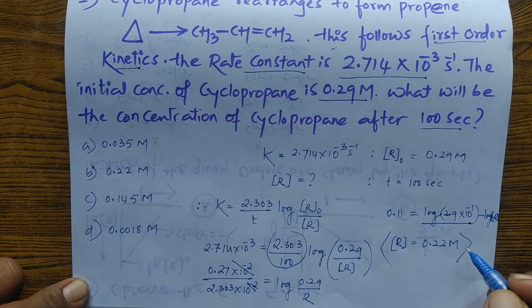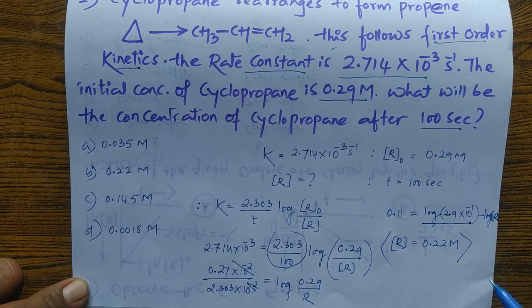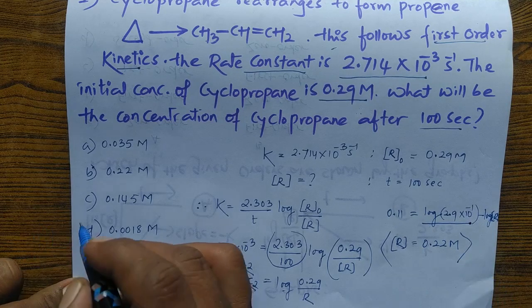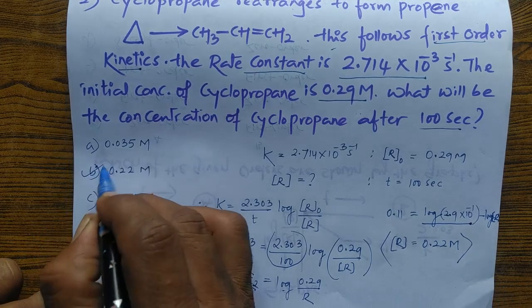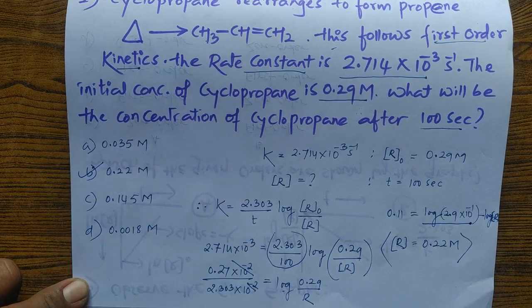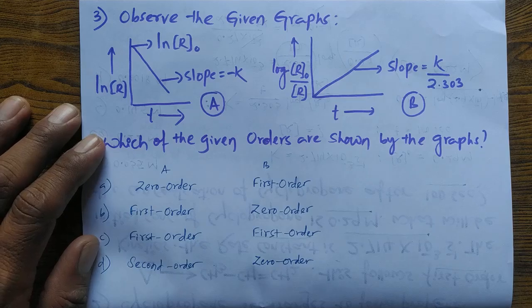So the answer for this question is 0.22 M, and the correct option will be B.